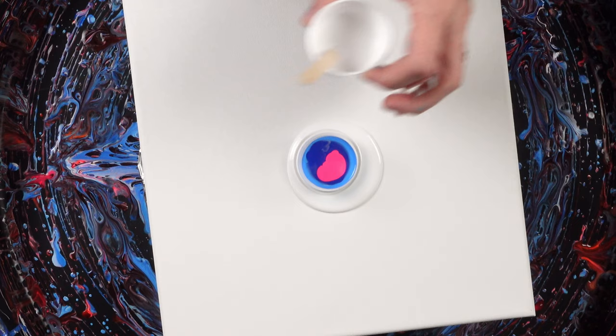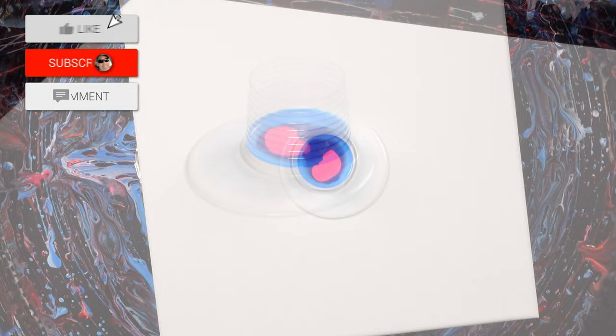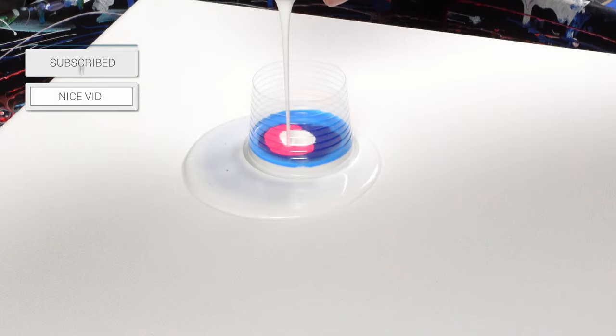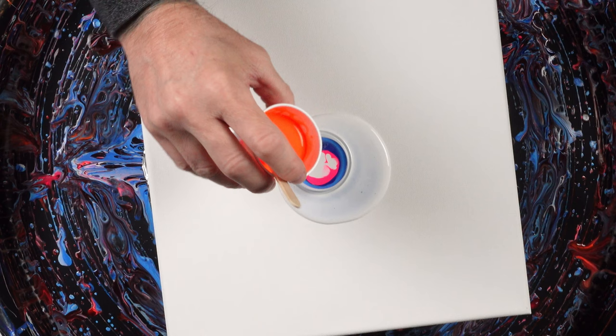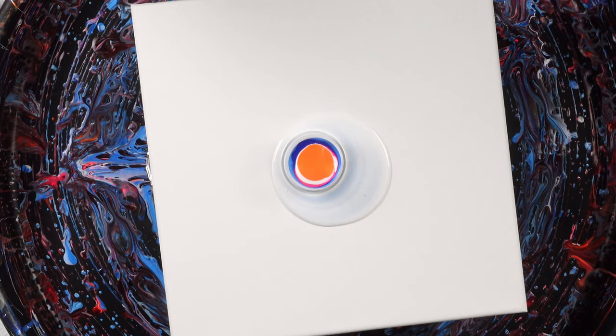All the paints have been mixed two parts pouring medium to one part paint. The pouring medium was the Artist Loft pouring medium and the silicone I used for the colors was OGX brand coconut milk hair serum.